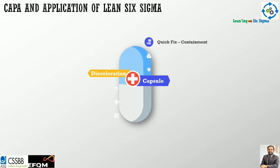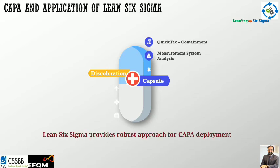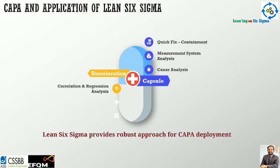Second, measurement system analysis — very important, because I am going to measure defects and report back what defects are occurring. For example, I am using the example of discoloration of a capsule, and I need to find out how defects are measured. If the measurement system has an error, it will obviously impact the whole process improvement and cause analysis. I will discuss the tools in greater detail in my next blog. Correlation and regression analysis is applicable to find out which factors are really correlating and impacting the discoloration in this case.